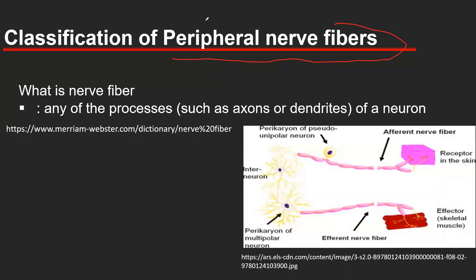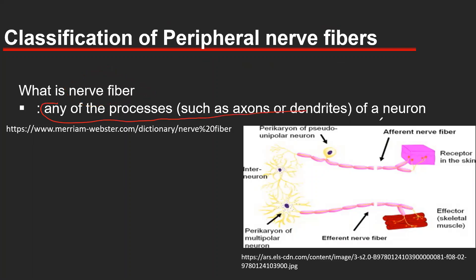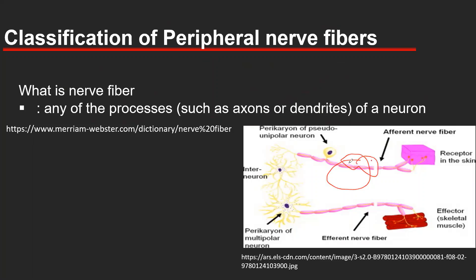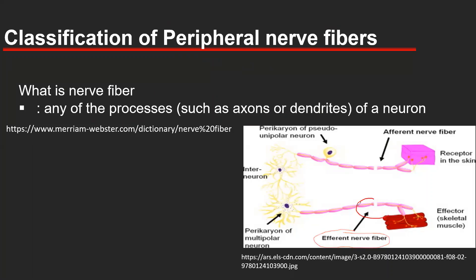Before going into the classification of peripheral nerve fiber, let us understand what a nerve fiber is. A nerve fiber is any of the processes of a neuron — it may be axons or dendrites. This is an afferent nerve fiber, which is the process arising from the cell body. In the same way, this is an efferent or motor nerve fiber, also a process of a cell body.